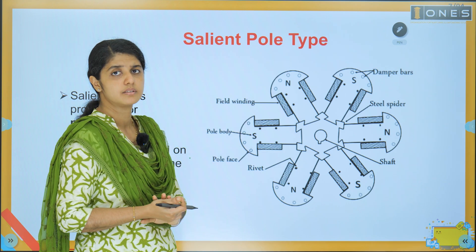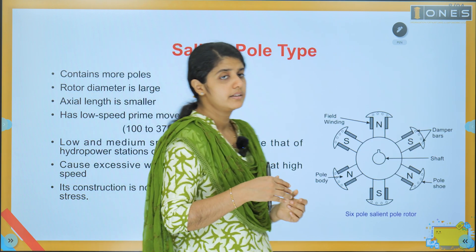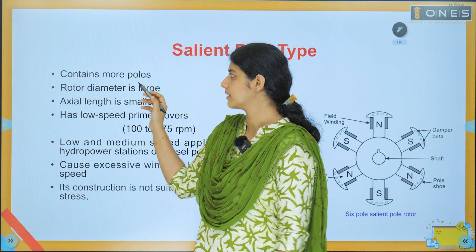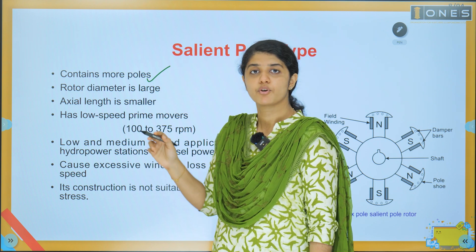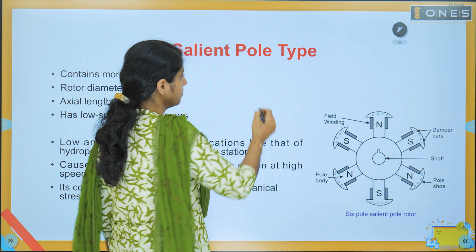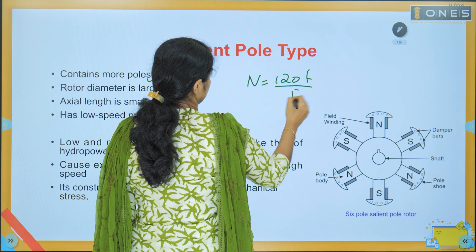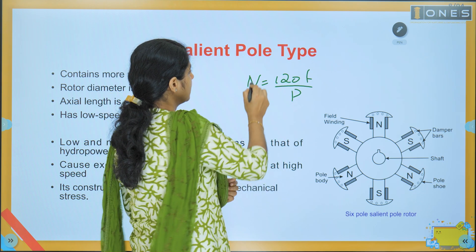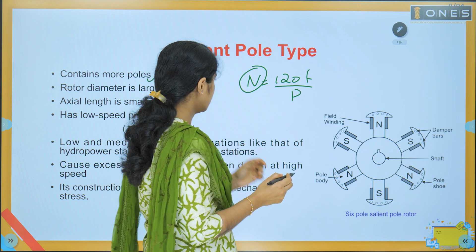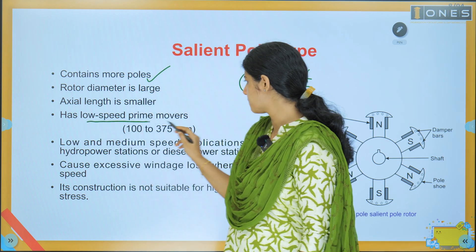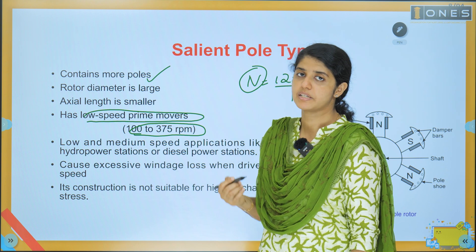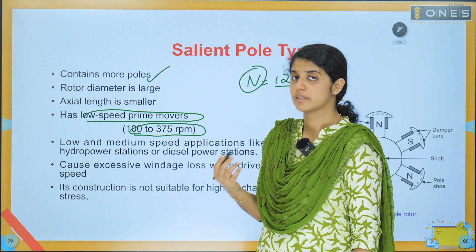This is the salient pole structure. Its first feature is the number of poles — it has a large number of poles. The speed is low, in the range of 100 to 375 RPM. We can use this salient pole machine with low-speed prime movers.